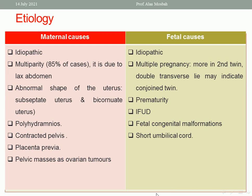Fetal causes include multiple pregnancies — we can see it in the second twin. Be careful: if in twin pregnancy both are transverse lie, we should exclude conjoined twins. Also prematurity, intrauterine growth retardation, intrauterine fetal death, fetal congenital malformation, and short umbilical cord are all fetal causes.